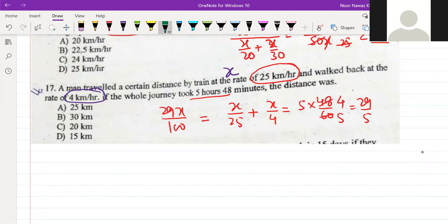Cross-multiplying: 29x times 5 equals 29 times 100. Solving this, x equals 20.